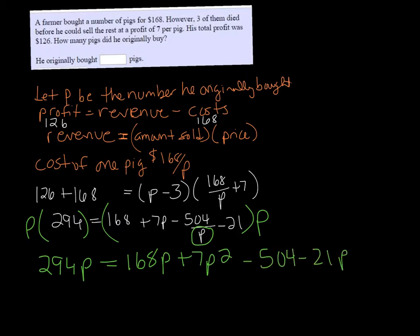We can combine like terms. $168 minus $21 is $147. So $294P equals $147P plus $7P squared minus $504.